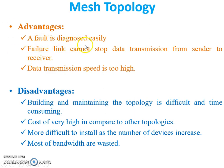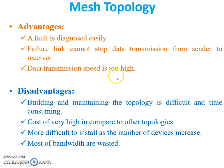Now the advantages and disadvantages of mesh topology. Advantage: a fault is diagnosed easily in mesh topology because a dedicated link is there. A failed link cannot stop data transmission from sender to receiver — if any dedicated link breaks, the data will be transmitted by another link. Data transmission speed is also very high.